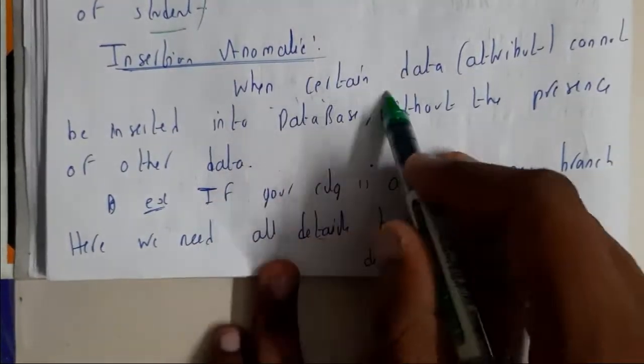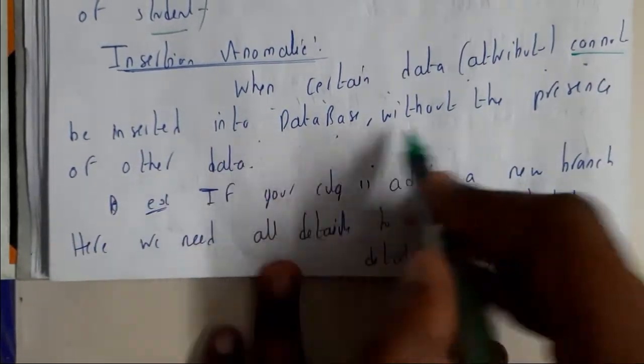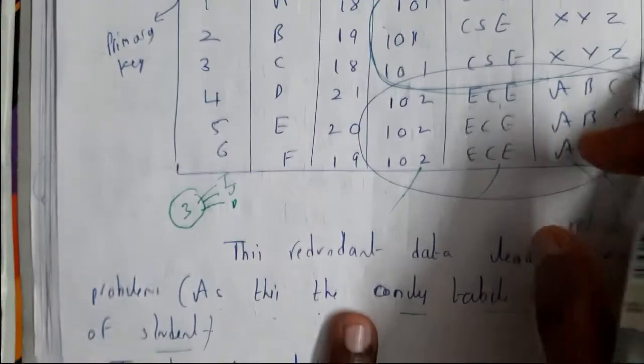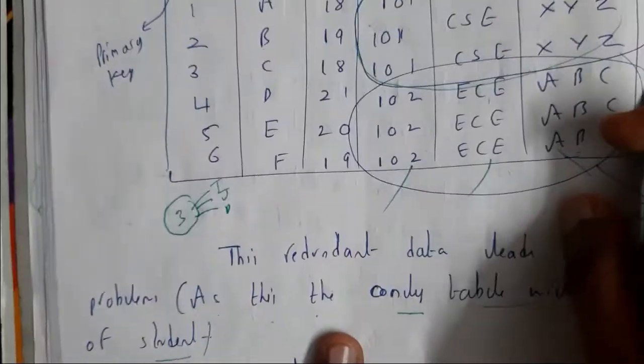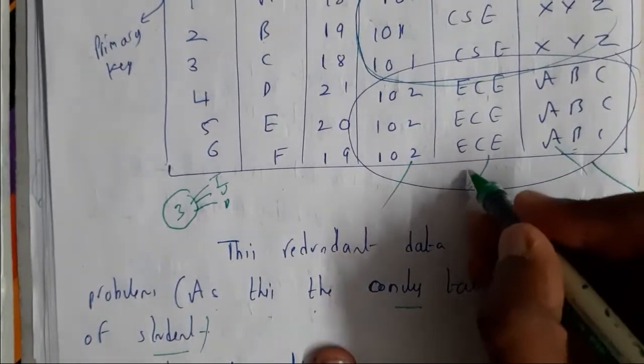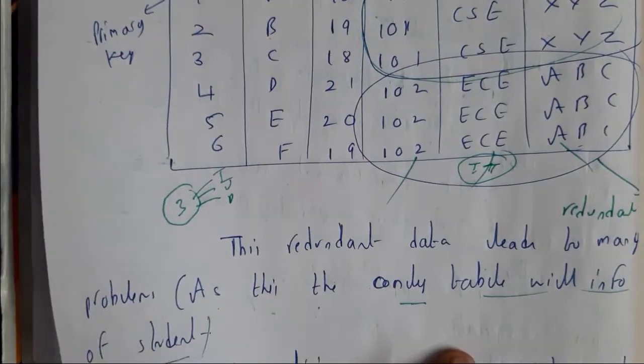Whenever certain data attributes cannot be inserted into the database without the presence of other data. Let us assume our college is going to add one more department ID. Basically, we are not having the department ID, so we cannot insert it because of the insertion anomaly.